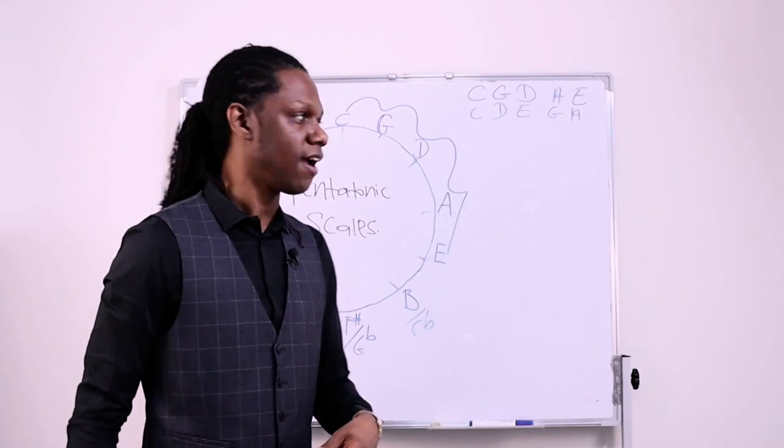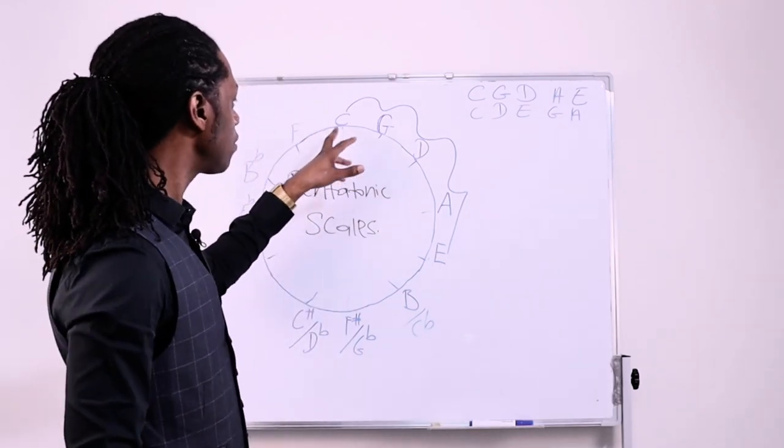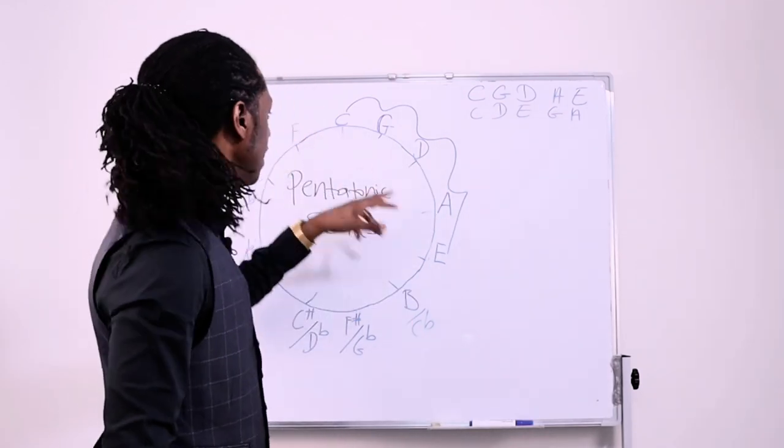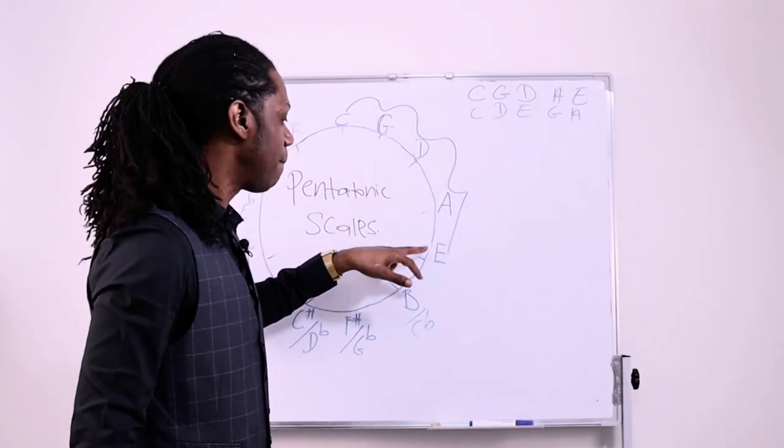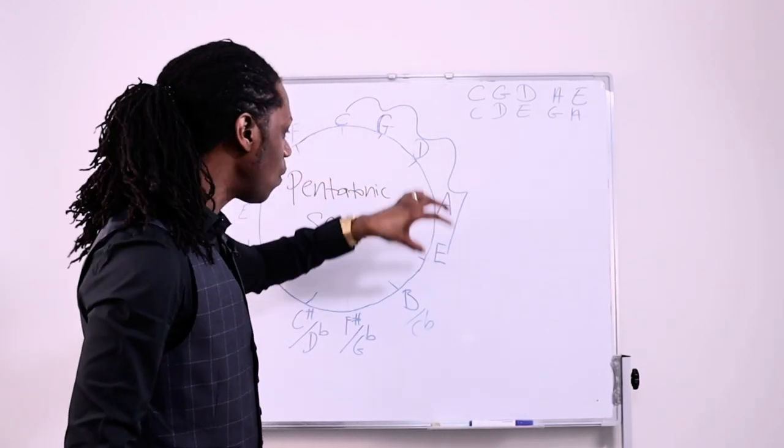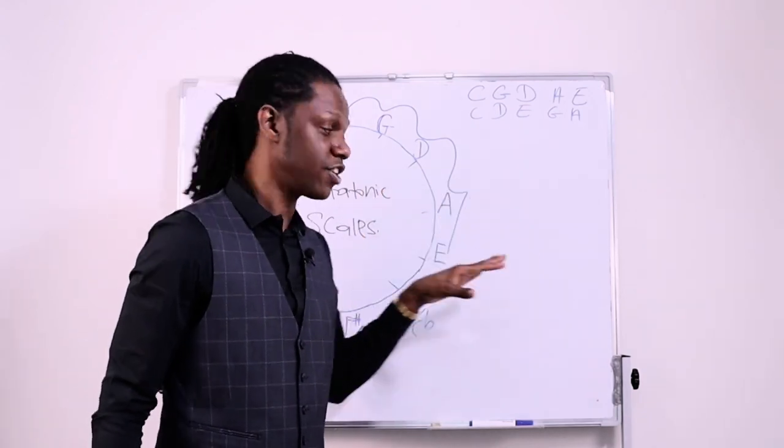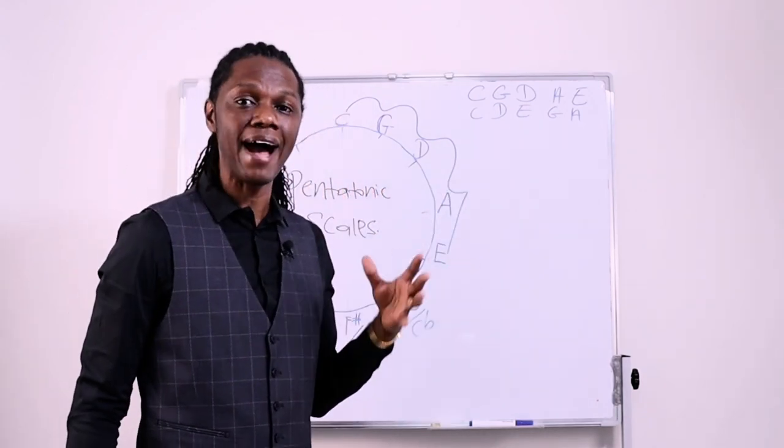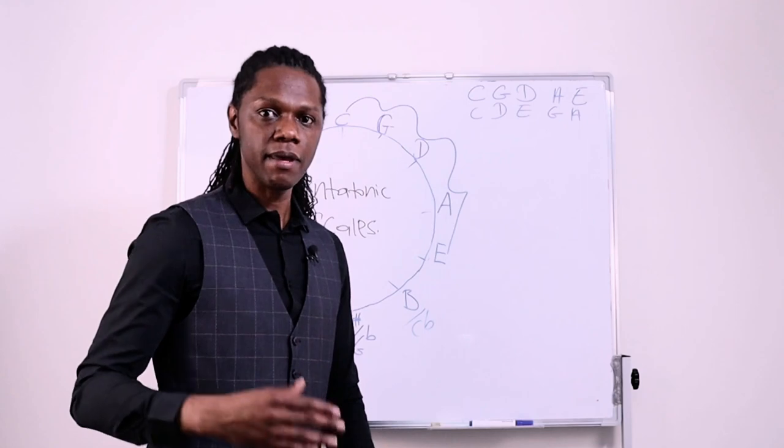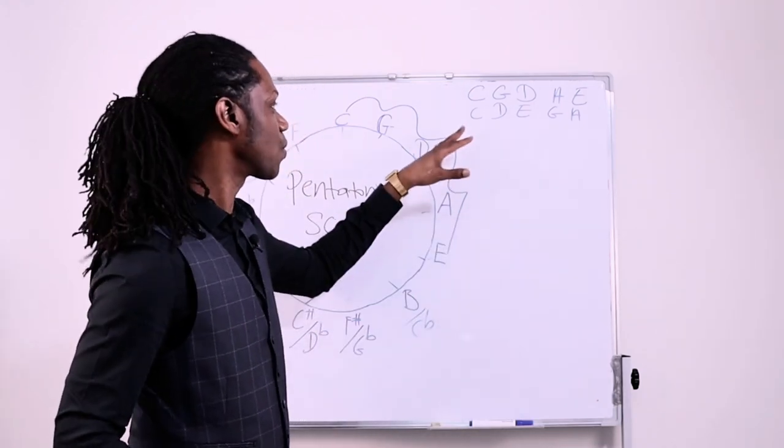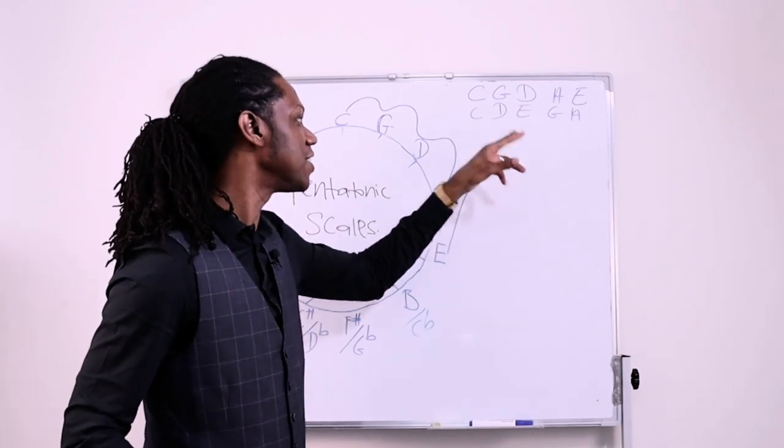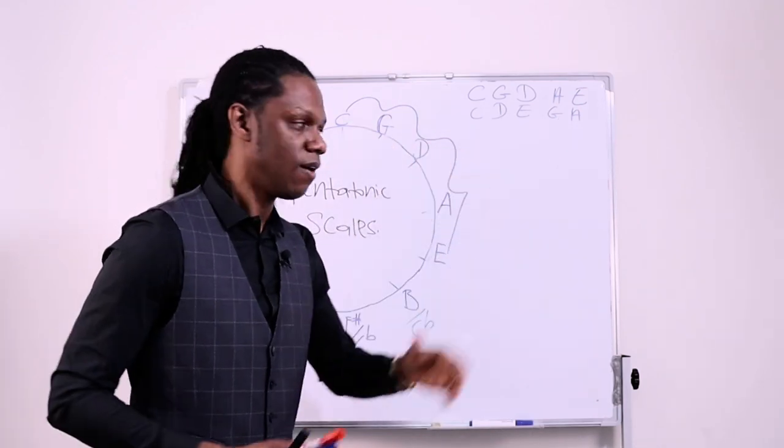However, if you were to use the circle of fifths and then you go C, jump up to G, then go to D, jump to A, back down to E, and you go in that order, in that pattern, you're creating your own pentatonic patterns and using rhythmic variations, then you will find that it will sound a lot more melodic than just going like a scale.